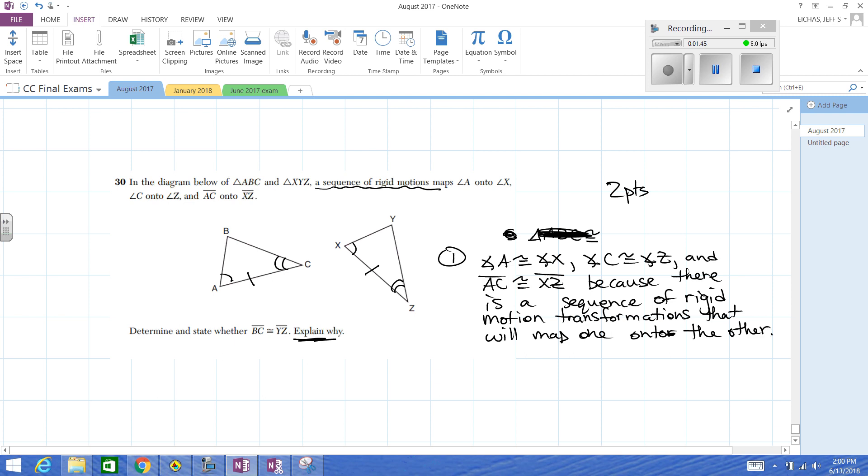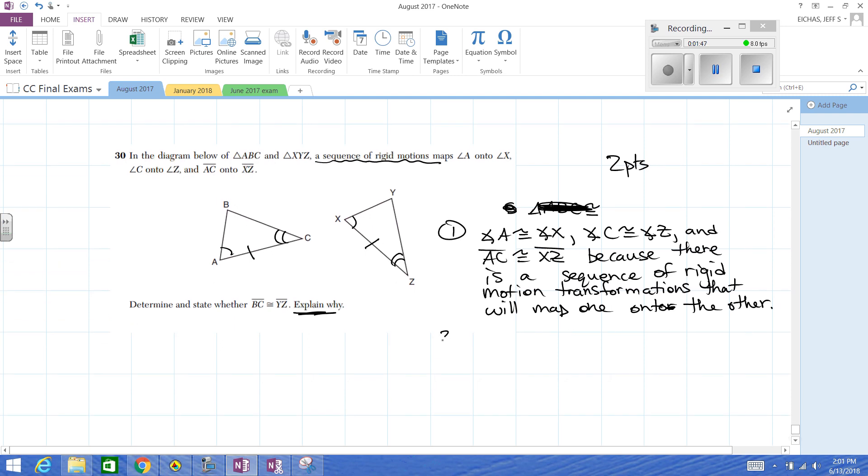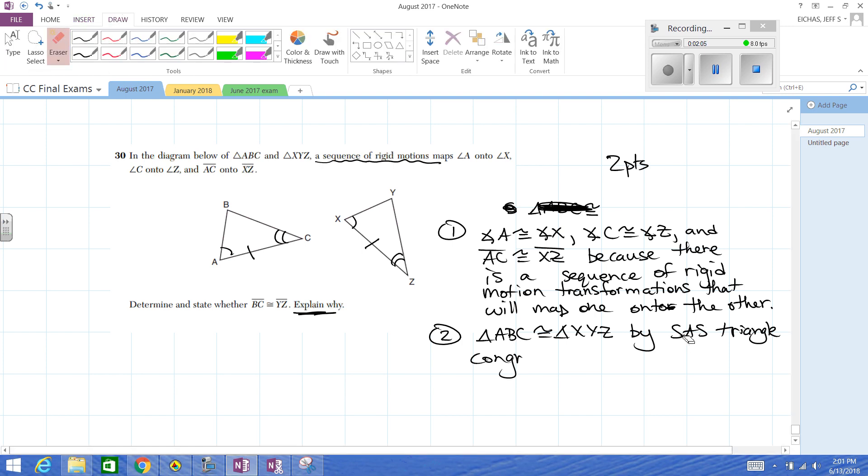So that's the first move. The second move is now triangle ABC is congruent to triangle XYZ by the side angle side triangle congruence theorem. Whoops, not the side angle side, I apologize. That is angle side angle. That's a pair of angles, that's a pair of sides, that's a pair of angles. So angle side angle.